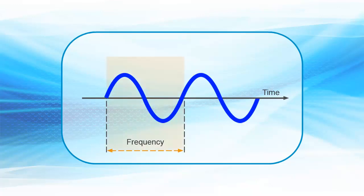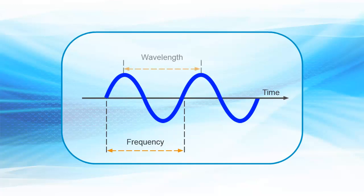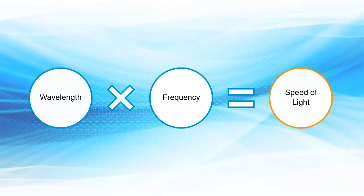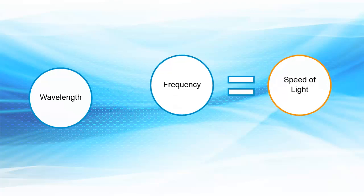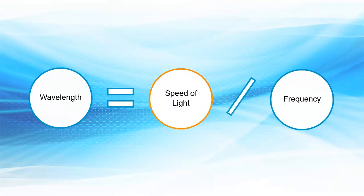while frequency indicates the number of times per unit of time that a signal repeats itself. For electromagnetic waves in free space, the two are linked by this simple relationship to the speed of light: wavelength times frequency equals the speed of light in free space. Or, put another way, wavelength equals the speed of light divided by the frequency of the waveform.